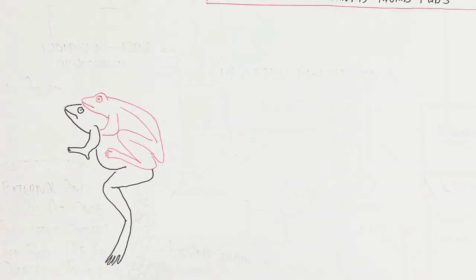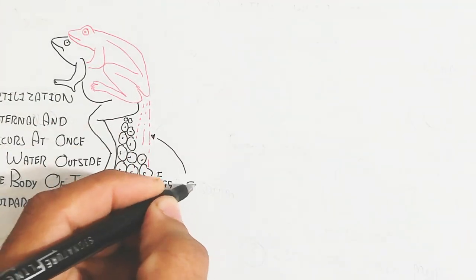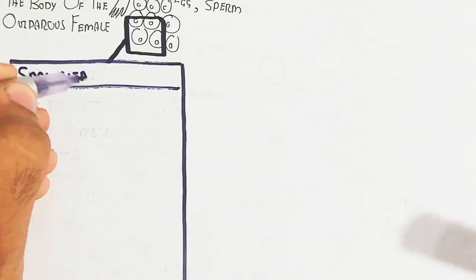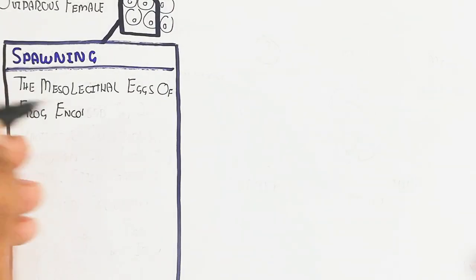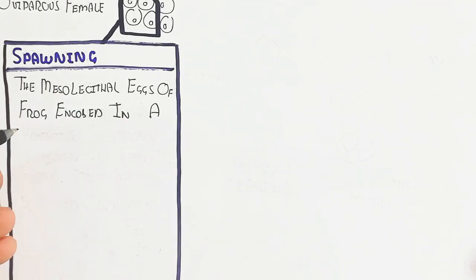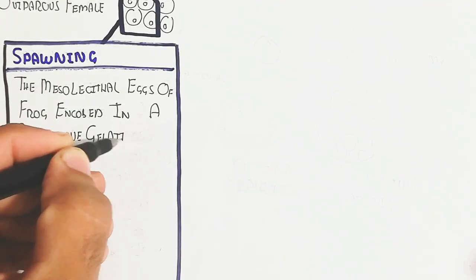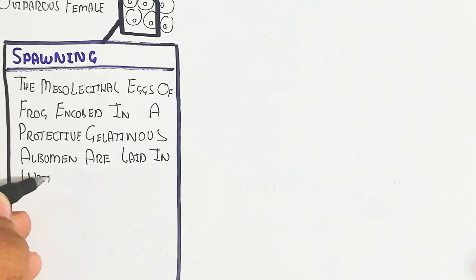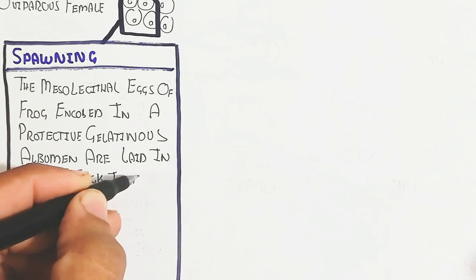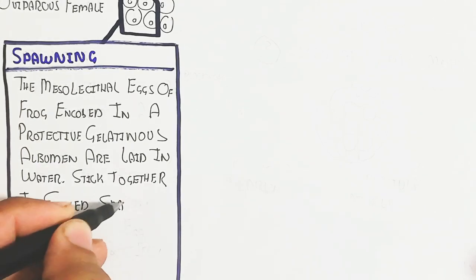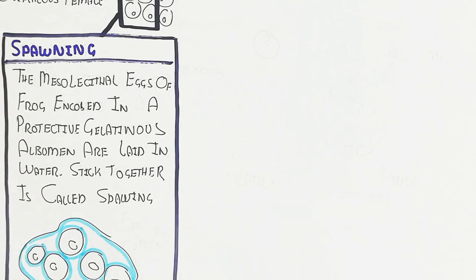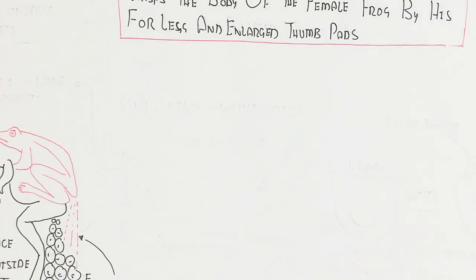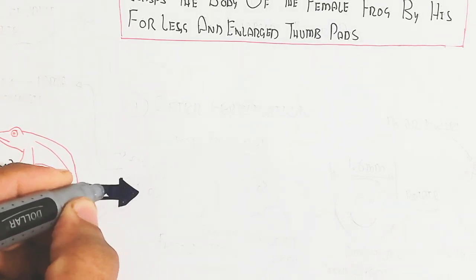So let's begin to understand — this is the frog. Red color is the male and the black color is the female. The female lays eggs in the water and sperm will be sprayed, and the fertilization is external, occurring in water outside the body of the oviparous female. The mesolecithal egg of the frog is enclosed in a protective gelatinous albumin and laid in water, sticking together — this is called spawning.